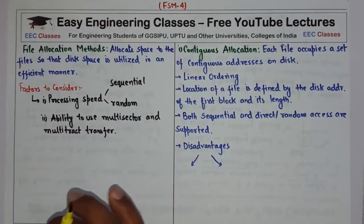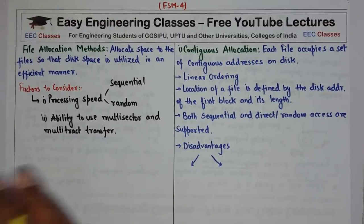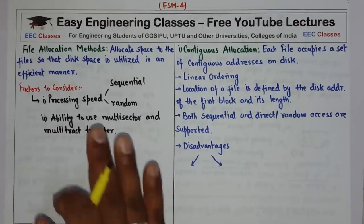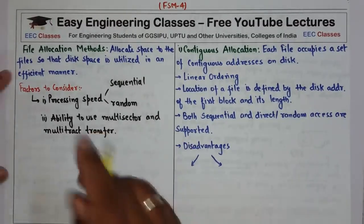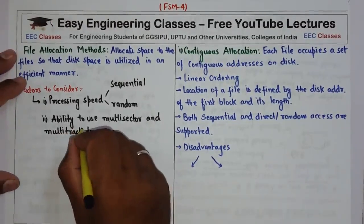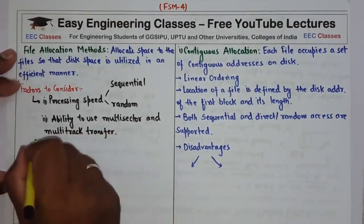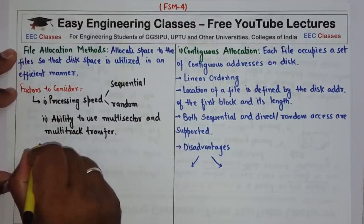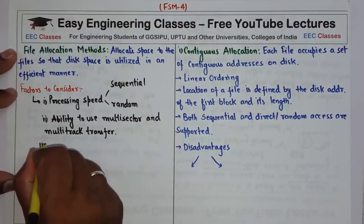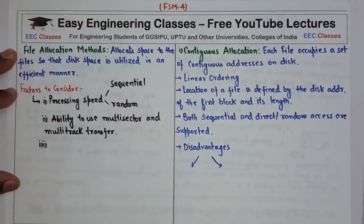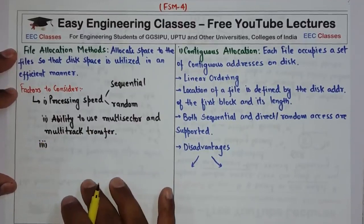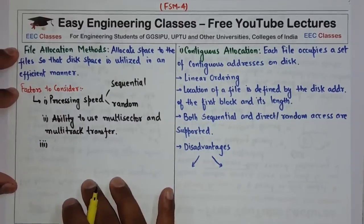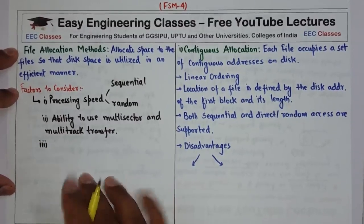Whatever space you are allocating, after allocation that file should be capable of using the concept of multi-sector and multi-track transfer. That is your second factor. The third factor is disk space utilization.